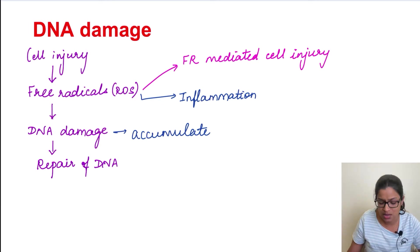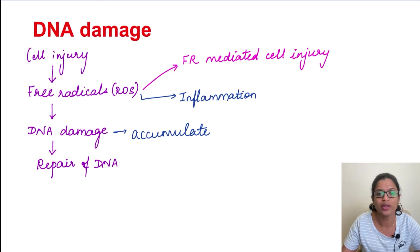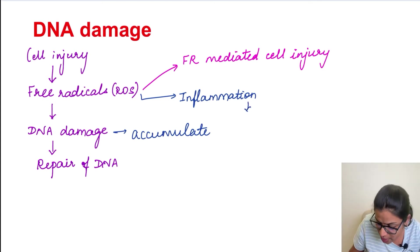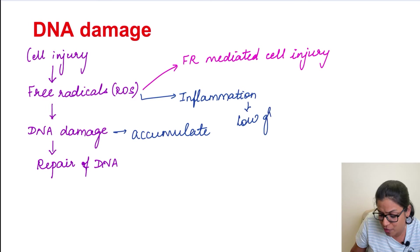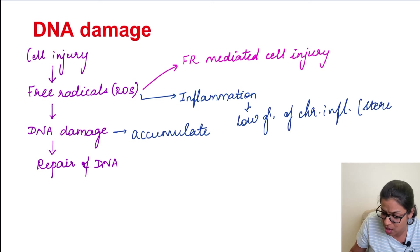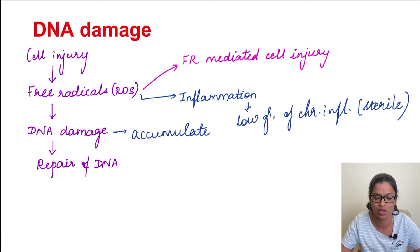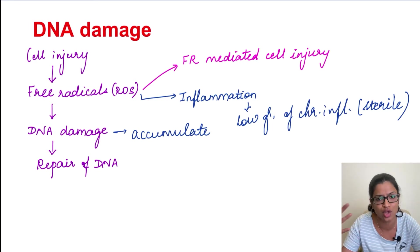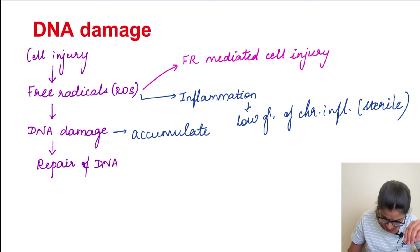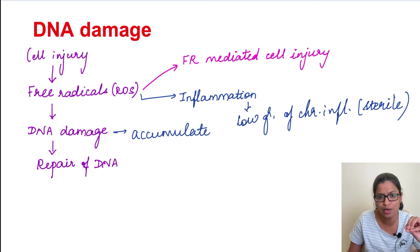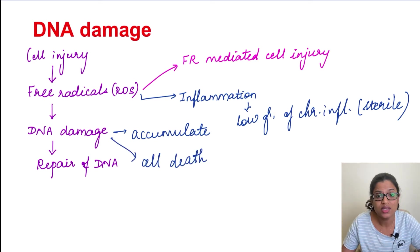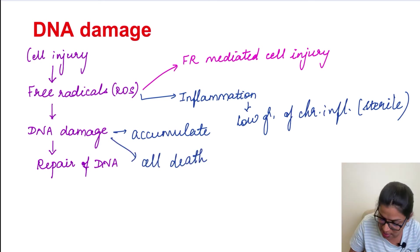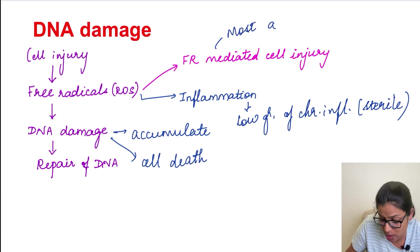Apart from that, these free radicals also tend to induce inflammation. In elderly people we can see a low grade of chronic inflammation — all the time they will have a low grade of chronic inflammation which is sterile in nature, meaning there is no infection as such. When inflammation is happening, inflammatory cells also produce reactive oxygen species, so this cycle will go on and the damage will get accumulated over the years. This DNA damage will ultimately lead to cell death.